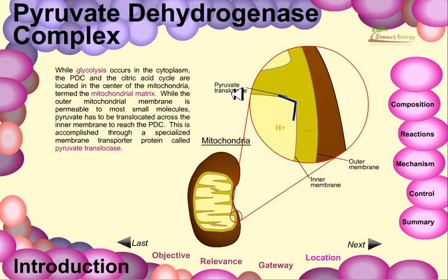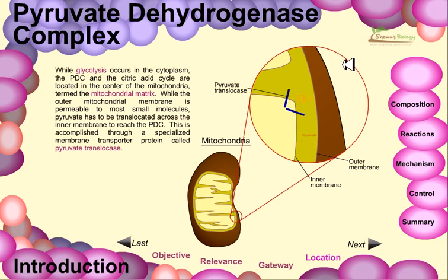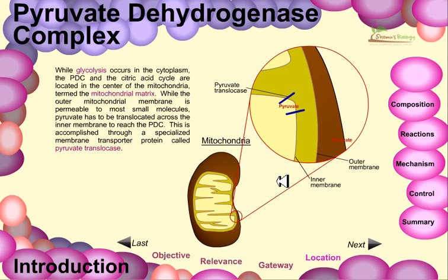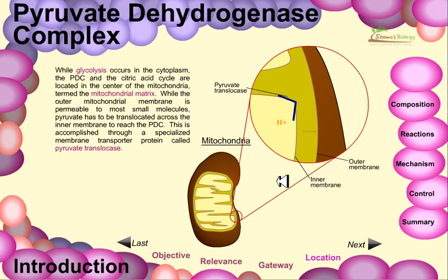If we look at the structure of pyruvate translocase, it acts like a valve. When a proton moves in one direction, it opens in that direction and closes on the opposite side, allowing pyruvate to move through. This pyruvate translocase protein is constantly changing its conformation as it transfers molecules. When transferring a proton, it changes structure so that protons are carried outside the mitochondria. Then it changes conformation again to transport pyruvate from the cytosol into the mitochondrial matrix.